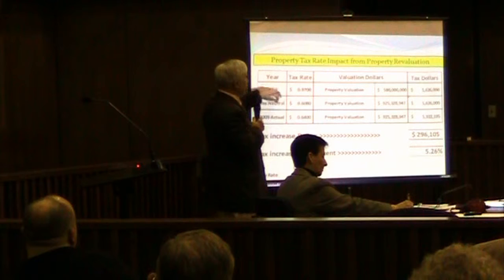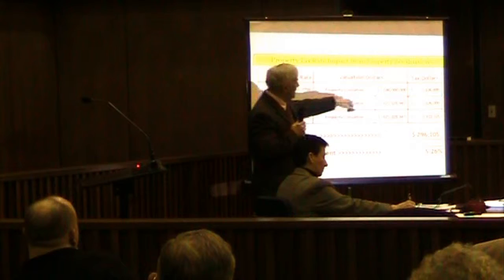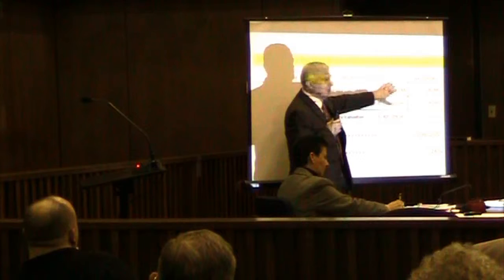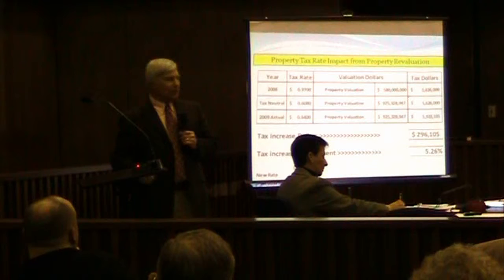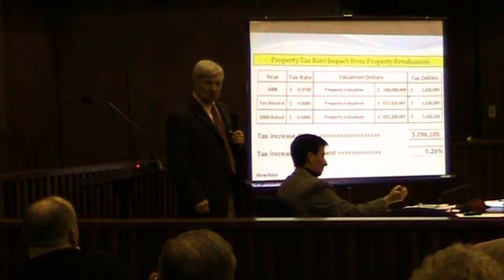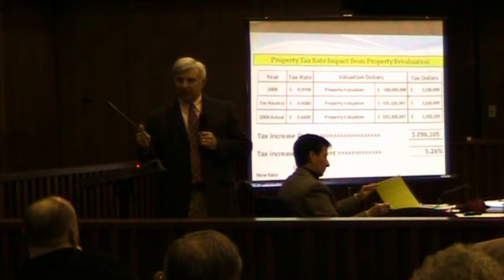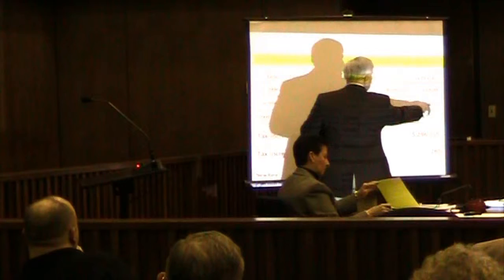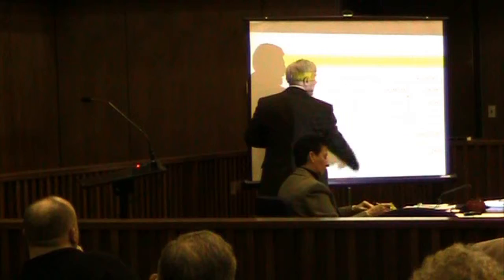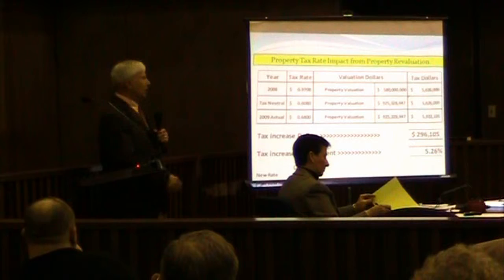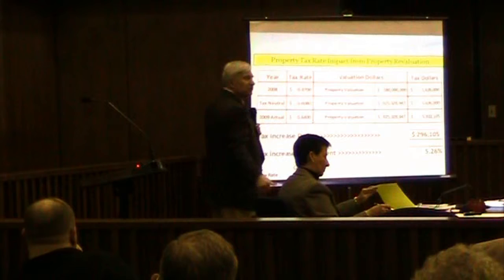In 2008, we had a 97% property valuation tax rate on the property — that was $580 million. These are fictitious numbers. Only $580 million worth of valuation, and we generated $5,626,000. Tax revaluation does this: you go get your property re-evaluated. You still have to generate $5,626,000. So you work in reverse. The new property tax valuation is $925,000, and this is the tax rate that must apply on this new valuation to generate the same amount of money.